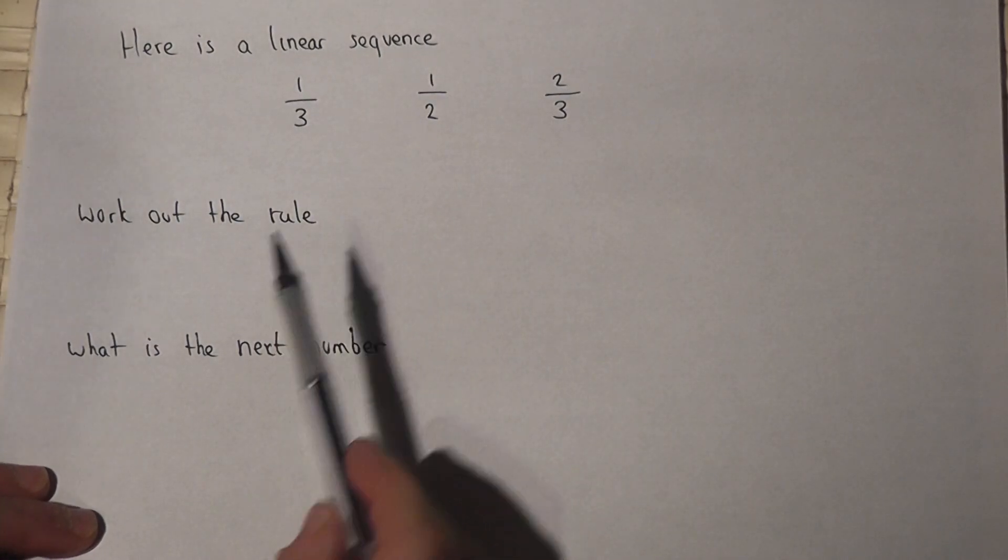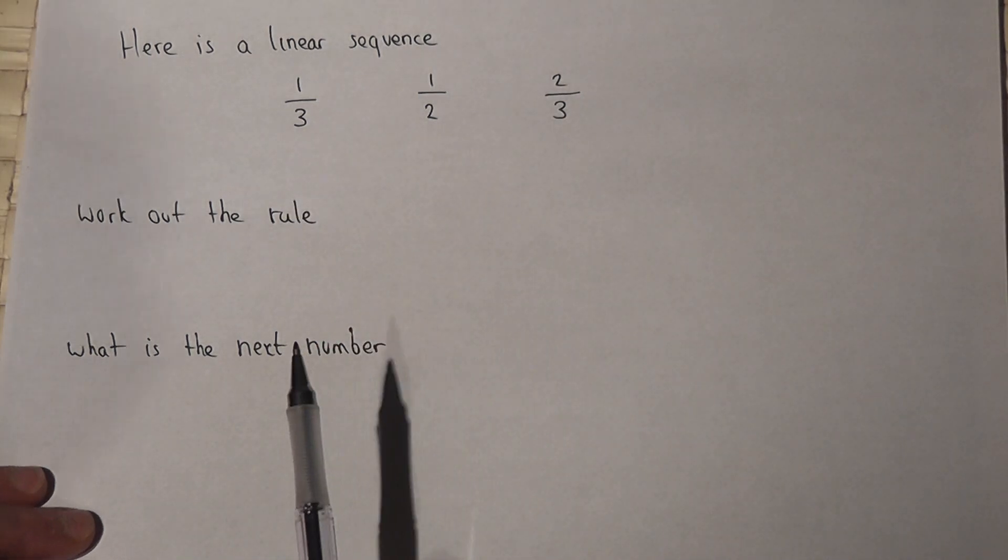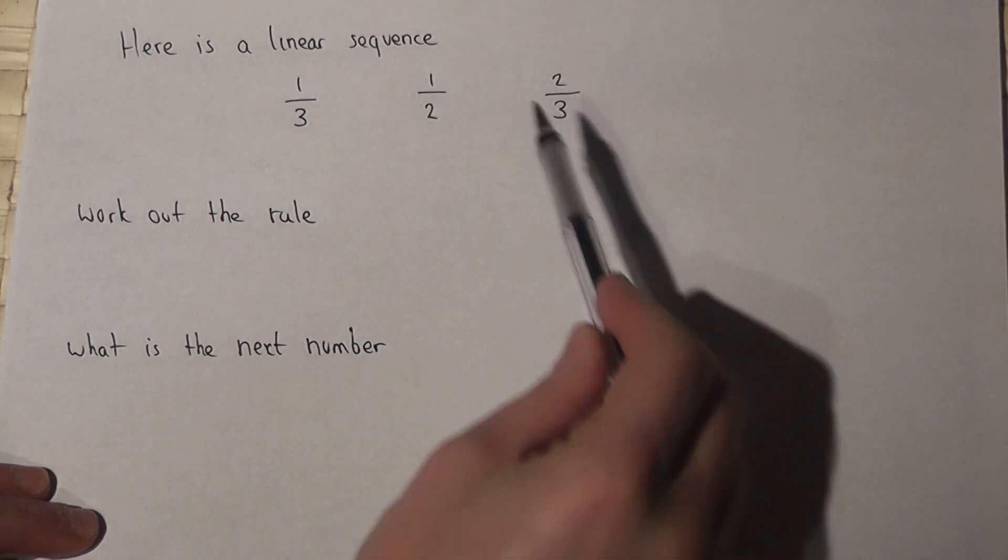In this problem we're given a linear sequence with the terms of fractions, and the question asks what's the rule and what's the next number in the sequence?